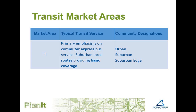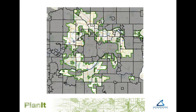Due to lower densities and less connected street patterns, the primary emphasis of transit in market area three is commuter express bus service to the downtowns. However, there are local bus routes that provide basic coverage to major destinations and transit centers like the region's various suburban shopping centers. This map shows the extent of transit market area three, which includes major portions of suburban and suburban edge communities like Burnsville, Woodbury, and Coon Rapids.